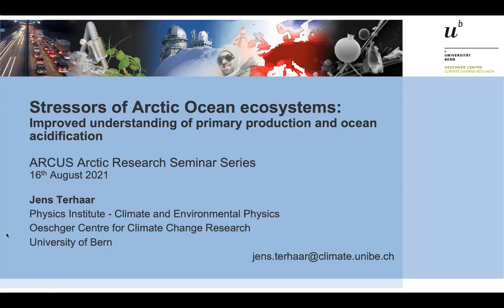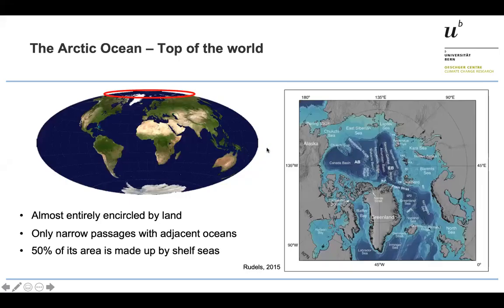If you have any questions about definitions or acronyms I'm using without introducing, please put them into the chat so we can clarify early enough. The Arctic Ocean — from a northern European perspective, I see it as the top of the world. It's very special compared to other parts of the global ocean. It's almost entirely encircled by land, connected to other oceans only via narrow passages, and the shelf seas make up almost 50% of the Arctic Ocean basin — so the coastal ocean takes up a large part of the area, which is very important.